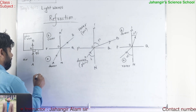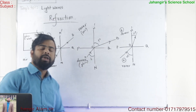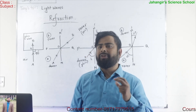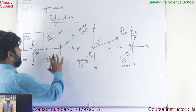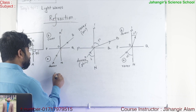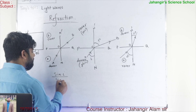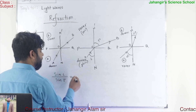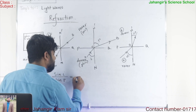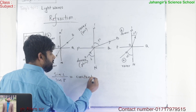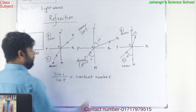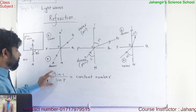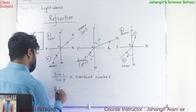Now, very important: refractive index. First, we have to learn about what is refractive index. For a pair of media and a particular color of light, the ratio of the sine of the angle of incidence to the sine of the angle of refraction is a constant number. There is a fixed value for a pair of media — say, if it is an air and glass pair, this value is fixed. So refractive index is a constant number. Sin i divided by sin r, for a particular pair of media and particular color of light, this value is fixed. This ratio is known as refractive index.